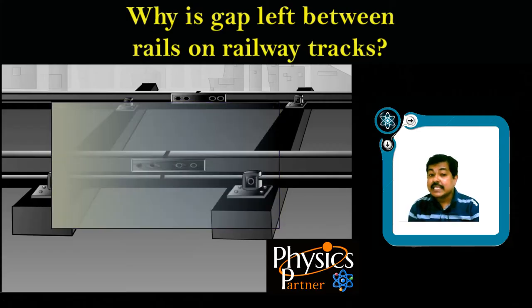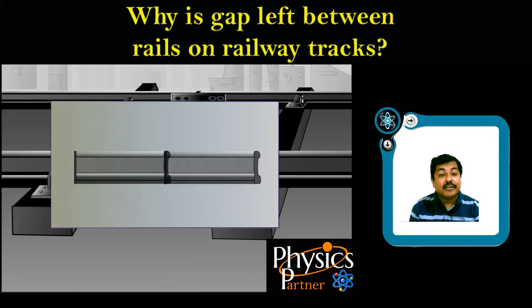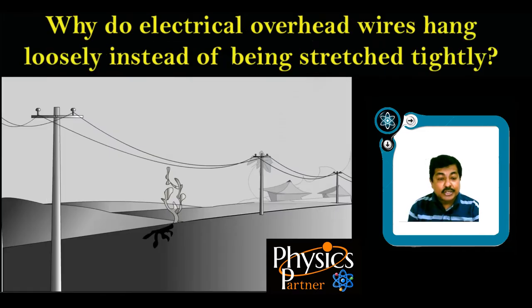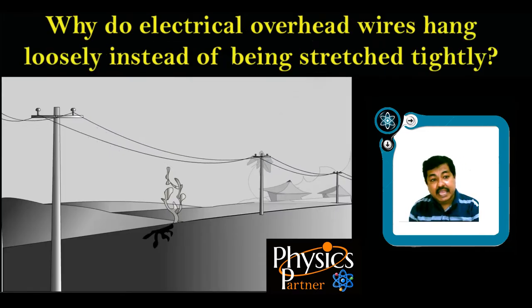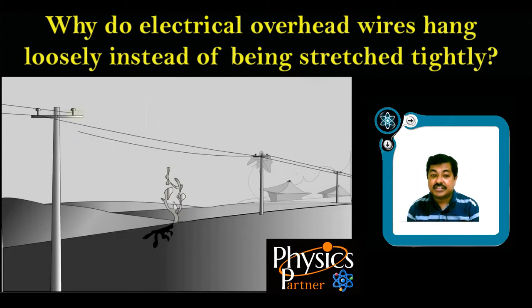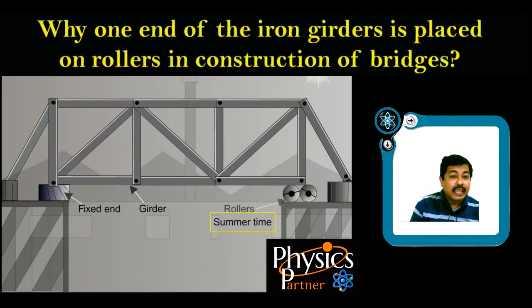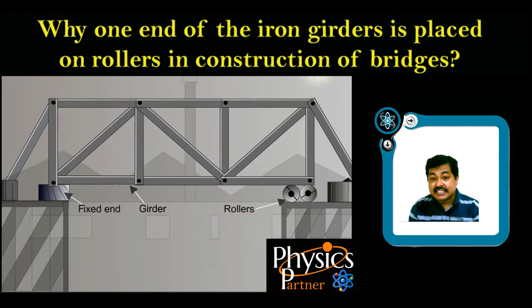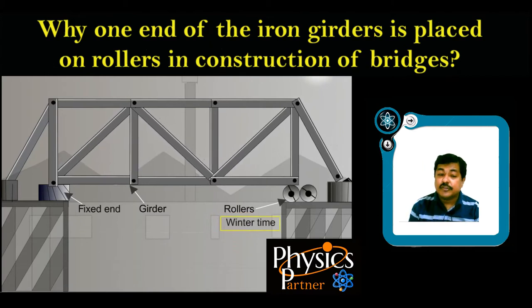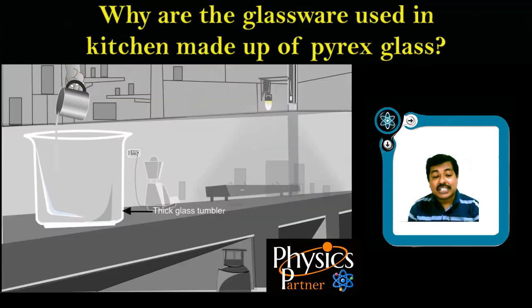Do you know why gaps are left between rails on railway tracks? Why do electrical overhead wires hang loosely instead of being stretched tightly? Why is one end of the iron girders placed on rollers in construction of bridges? Why are glassware used in kitchens made up of pyrex glass?